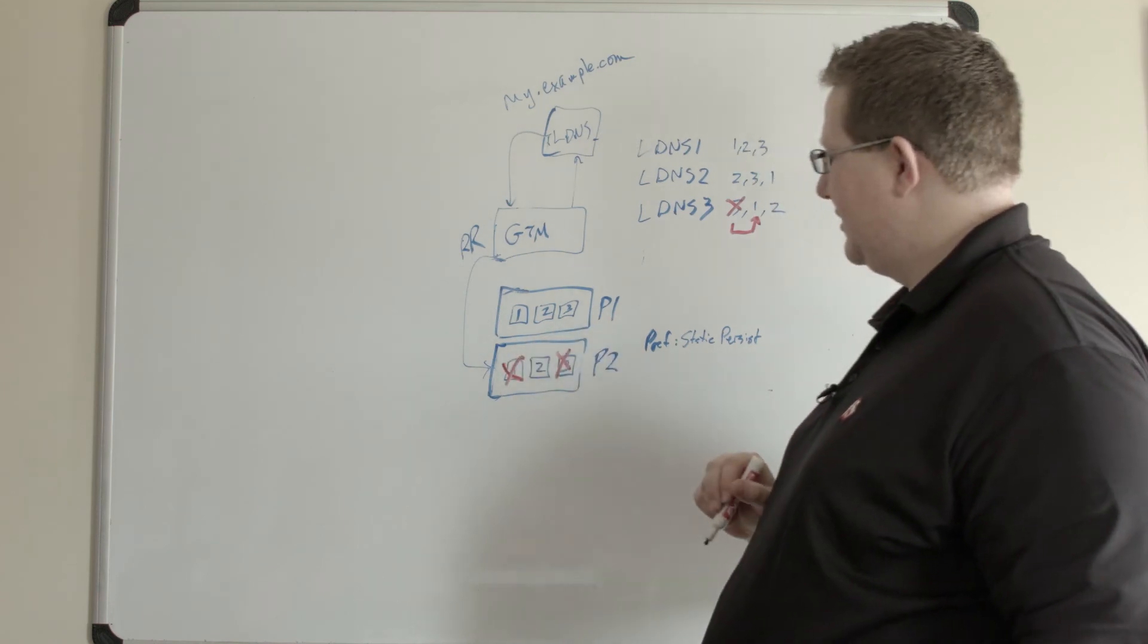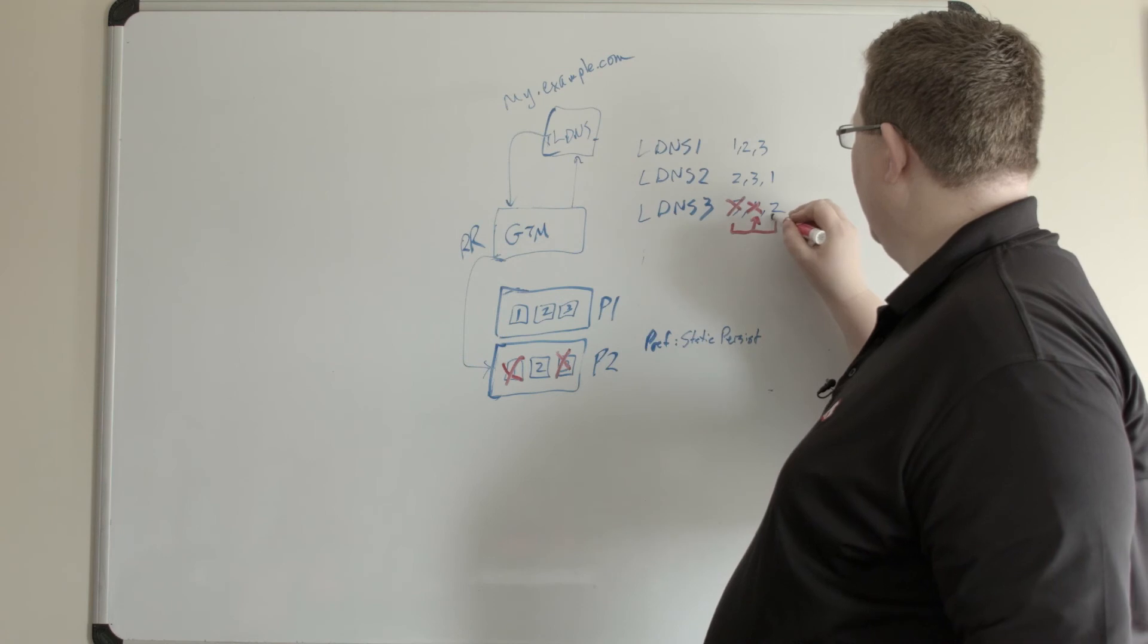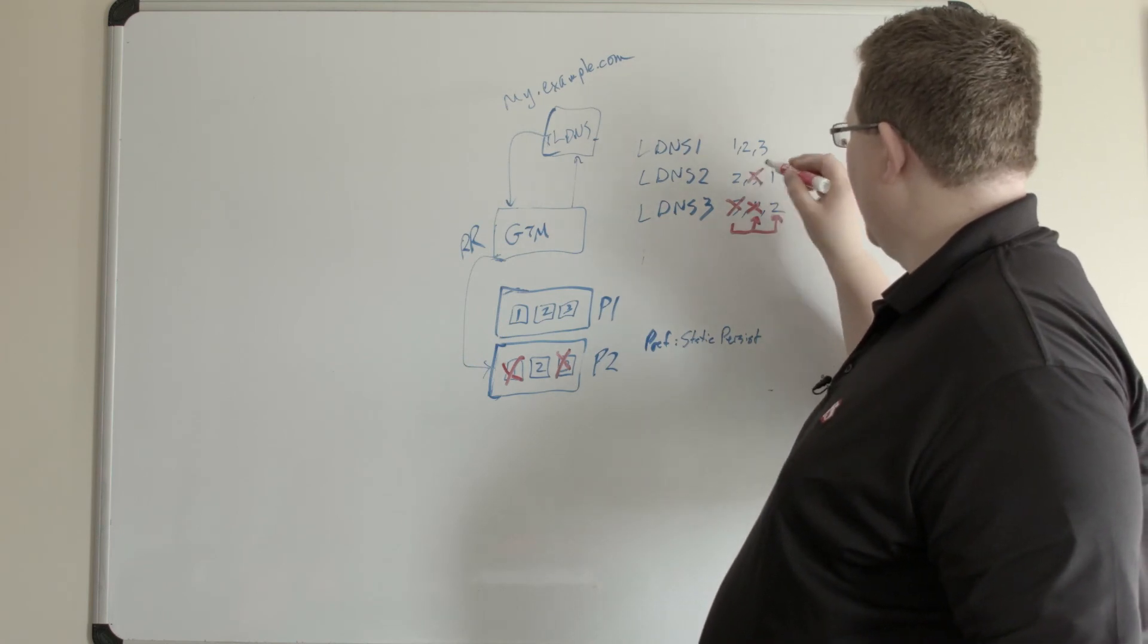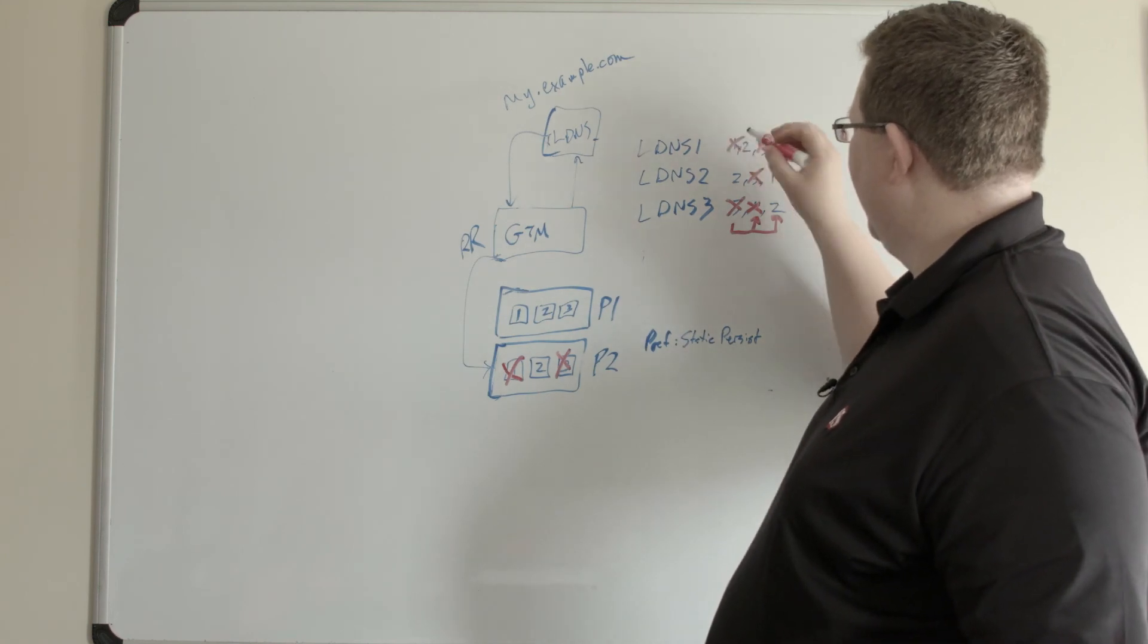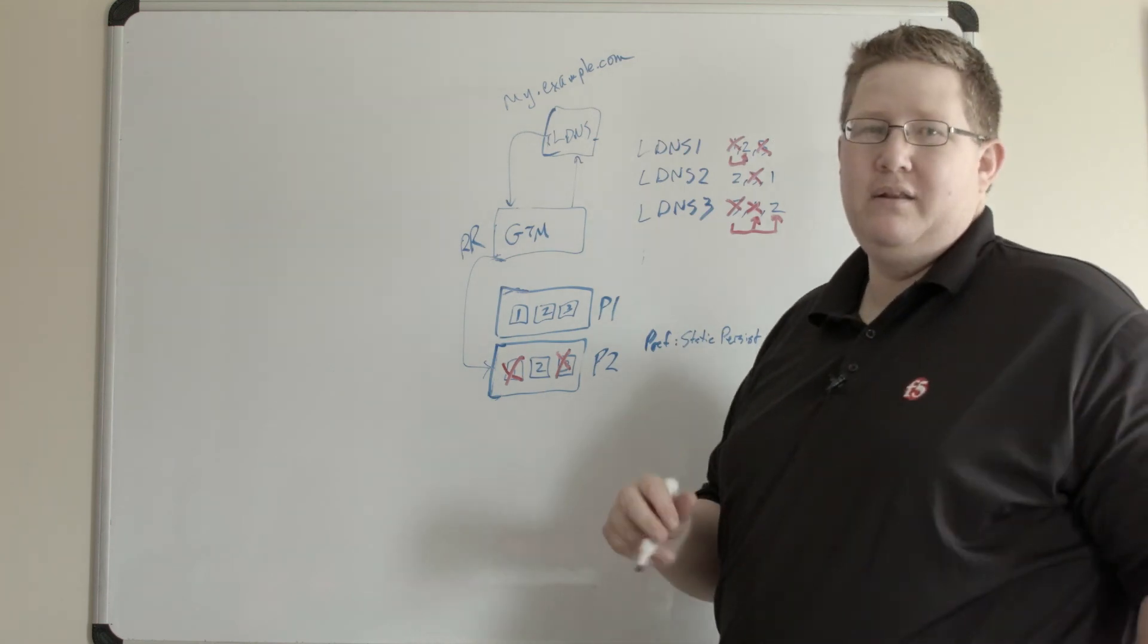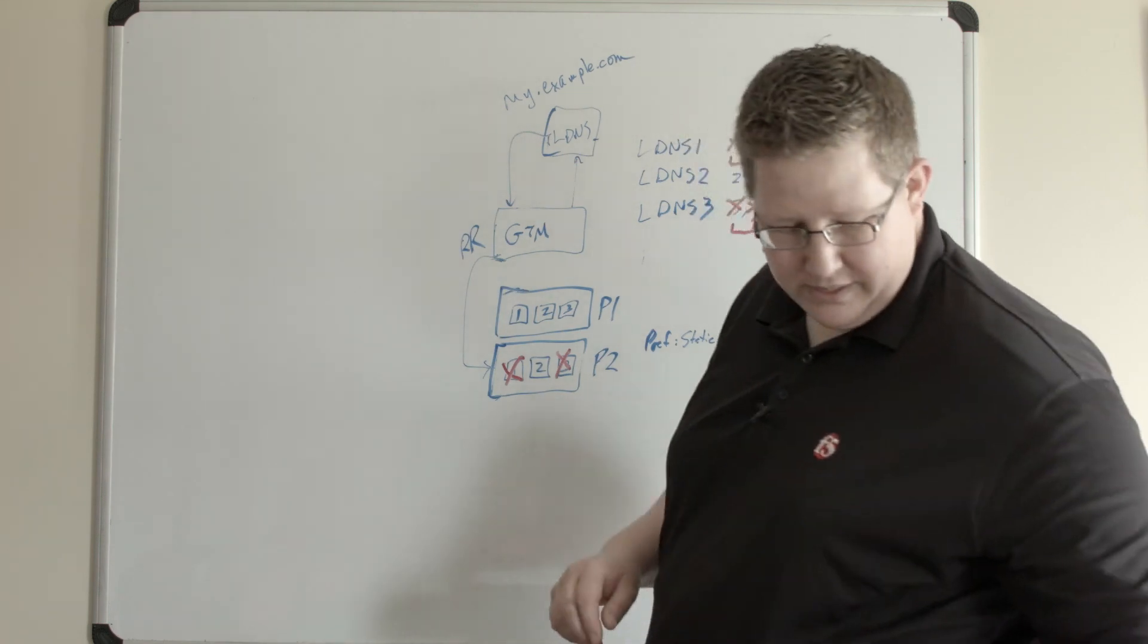But then if I lose also server one, now LDNS three is going to get moved again. Three was already gone, two stays where it was, and because LDNS one lost, it's going to get moved to number two. That's how static persist works.